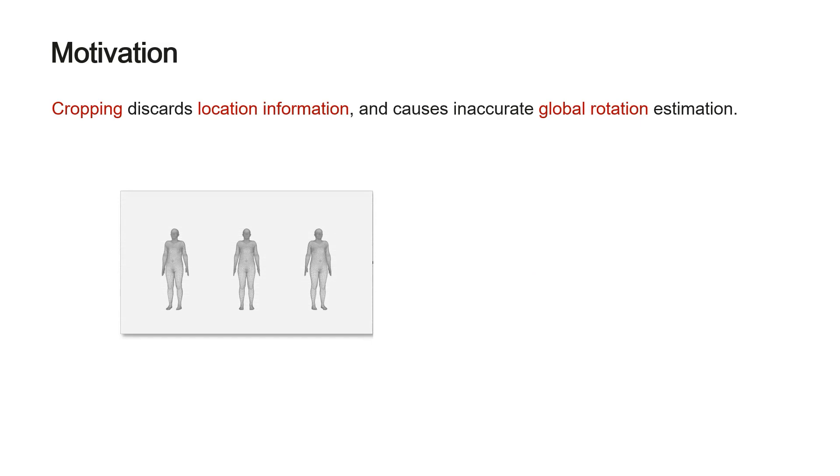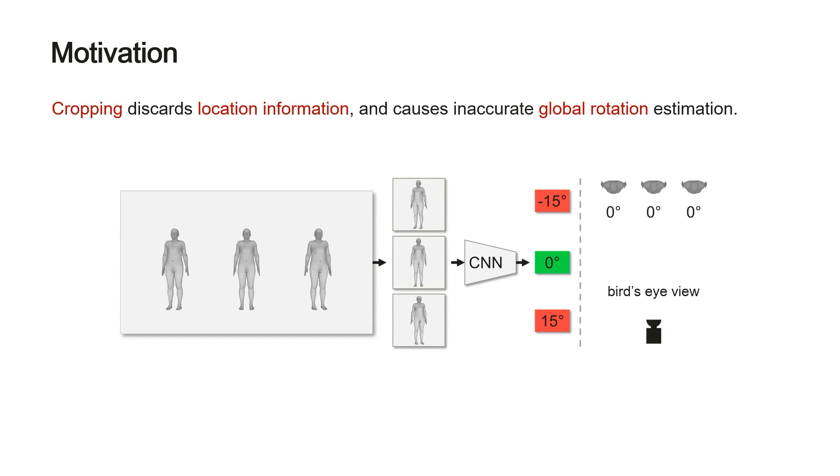Here's another example. The cropped images look different and will get different predictions, but their global rotations are the same. The same problem exists for other 2D evidences such as 2D keypoints.